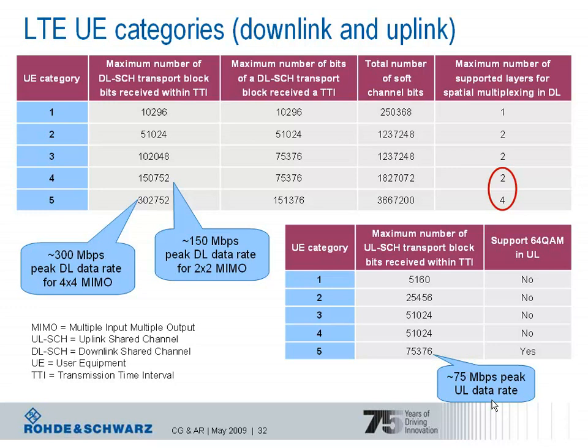These tables show the LTE UE categories — terminal categories for downlink and uplink specified for LTE. The upper table is for downlink, where five UE categories are defined. They differ in the maximum number of downlink shared channel transport block bits that can be received in a one millisecond transmission time interval, which determines the peak downlink data rates. For example, a UE of category 4 is able to receive around 150,000 bits in one millisecond TTI, translating into a 150 Mbps peak data rate.